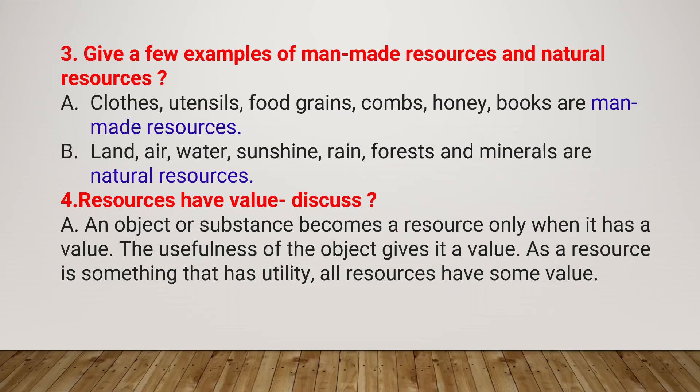Give a few examples of man-made resources and natural resources. Man-made resources include clothes, utensils, food grains, combs, honey, books, etc. Natural resources include land, air, water, sunshine, rainforests, and minerals.